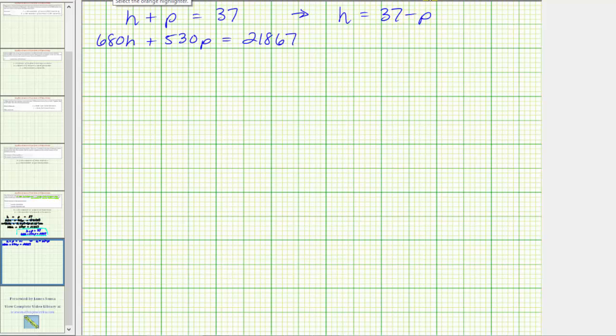Now that we have the first equation solved for h, we can perform a substitution for h in the second equation. We can substitute 37 minus p for h, which will give us one equation with one unknown. Performing this substitution, we'd have 680 times the quantity 37 minus p plus 530p equals 21,867. Notice now we have an equation with one unknown, which we can now solve for p.